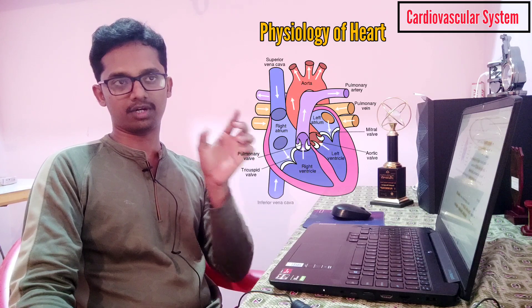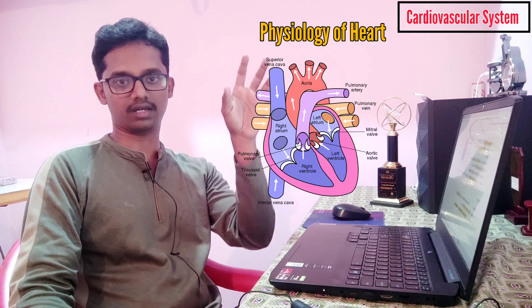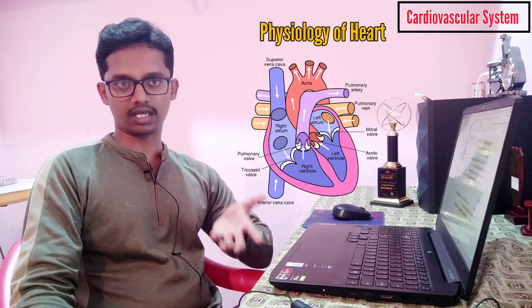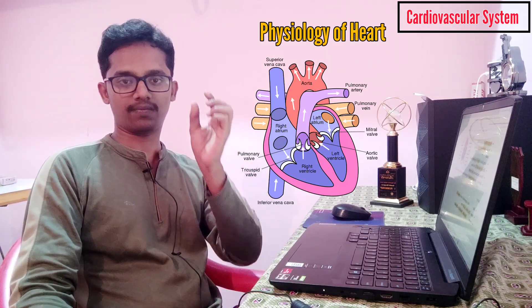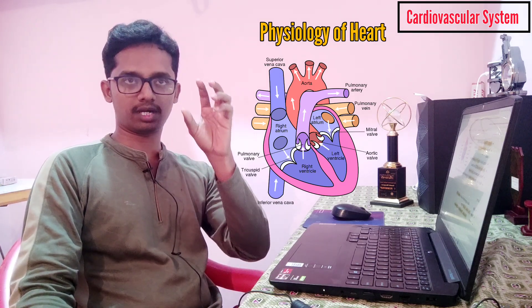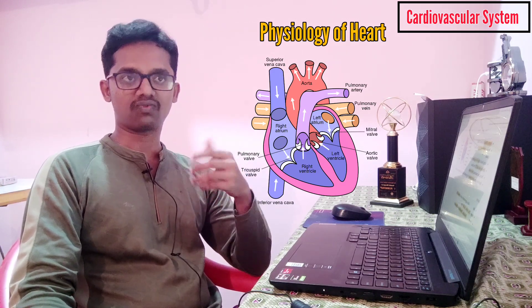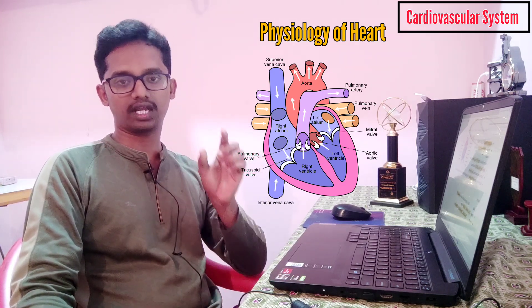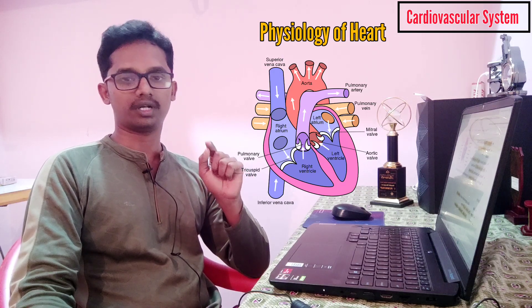Now we see the physiology of the heart. I hope you have already seen the anatomy of the heart — that will help you better understand. There are 4 chambers in the heart: right atrium, right ventricle, left atrium, and left ventricle. Blood fills the right atrium through the superior region. Between the right atrium and right ventricle, there is a valve — it is called the tricuspid valve.